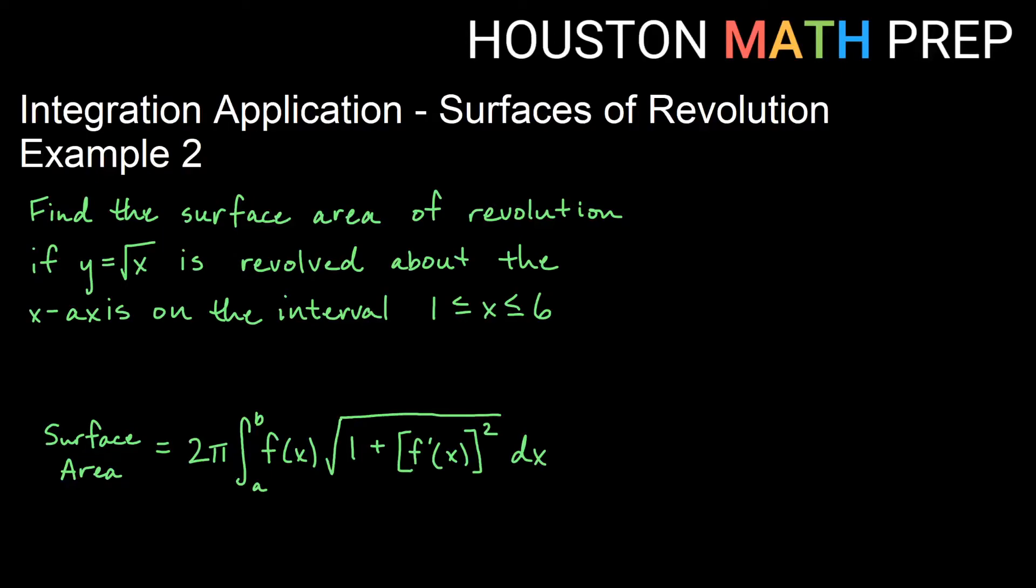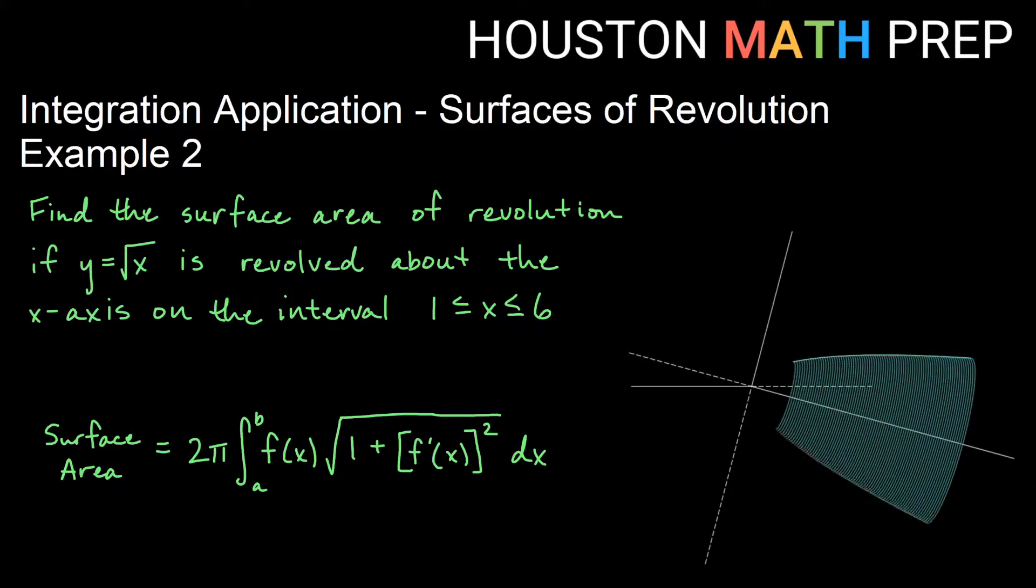Welcome back everyone to our second of three example videos for surfaces of revolution using integration in calculus. In this one we are going to be revolving a piece of y equals square root x about the x-axis. Here you can see I've got a piece of that function revolving about the x-axis, particularly on the interval from x equals 1 to x equals 6.